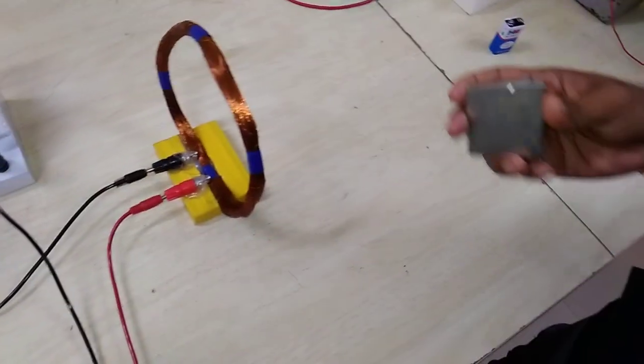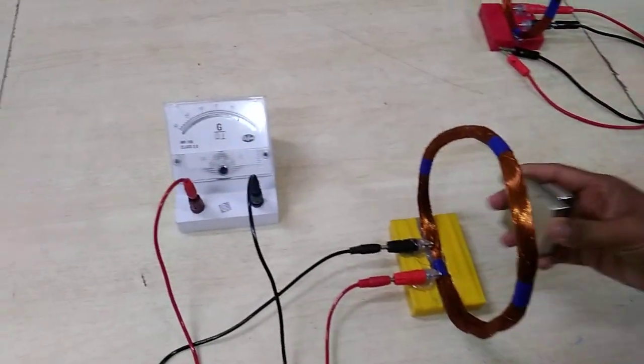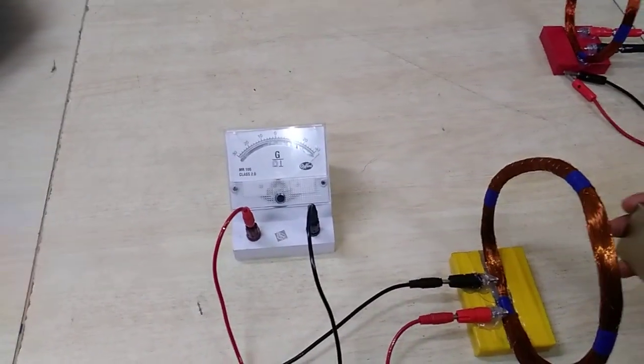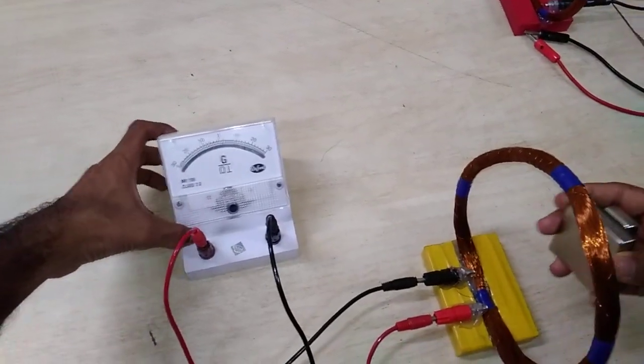So this neodymium magnet, if I change the flux, it induces a current which has deflection in the galvanometer.